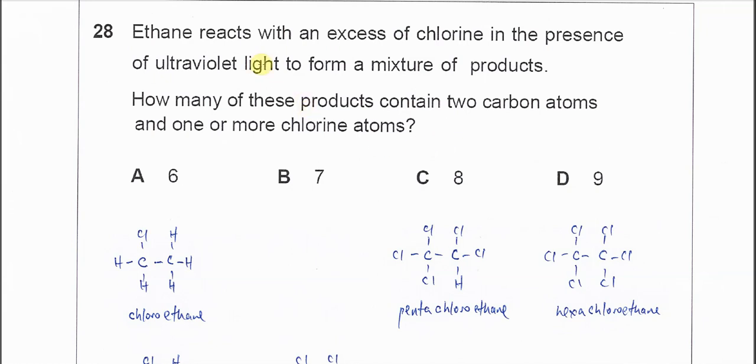In this question, ethane reacts with chlorine in the presence of UV light to form a mixture of products. This is free radical substitution. How many of these products have two carbon atoms and one or more chlorine atoms? We need to find all possible compounds that can be formed after free radical substitution.